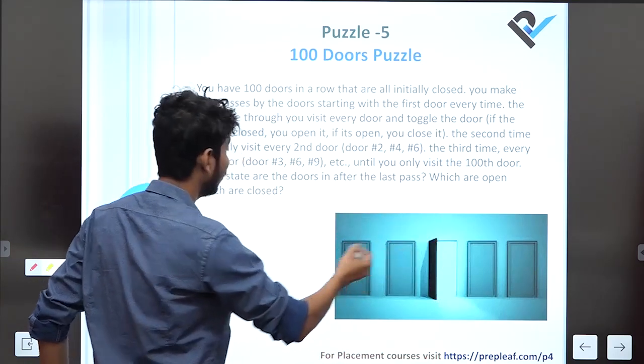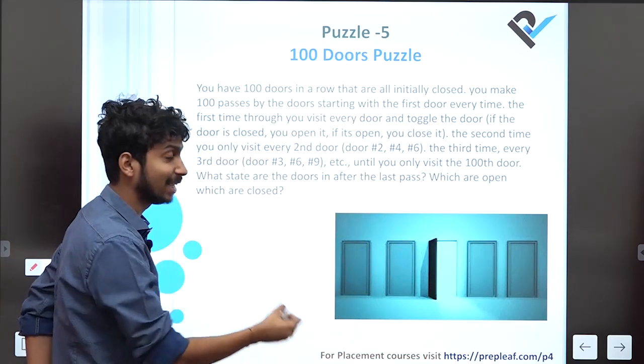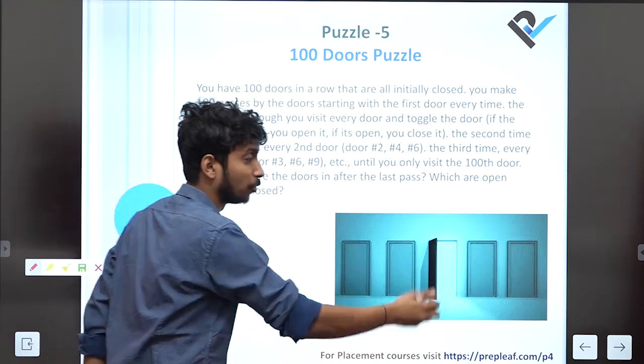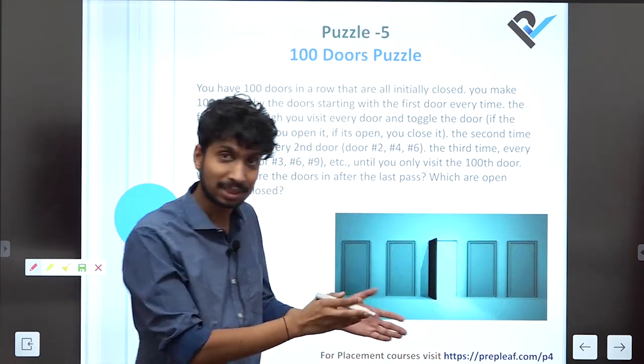Then the second time, we start visiting every second door — door 2, 4, 6, 8, and so on — and toggle them.